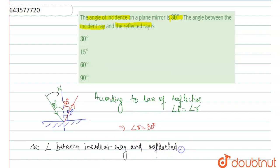So the angle between the incident ray and reflected ray is a total of 60 degrees. The final answer is: the angle between the incident ray and reflected ray equals 60 degrees.